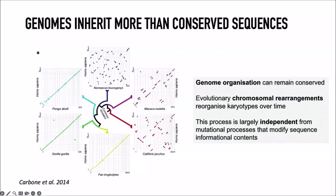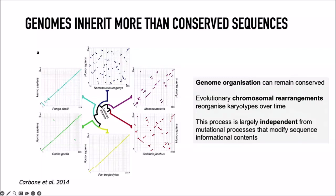Here is a different representation of the same type of information, looking at the organization of chromosomes. In this dot-plot between human and chimpanzee, dots represent orthologous sequences and they organize along the diagonal because the chromosomes are largely collinear. As we look at human versus more distantly related species, this organization remains conserved to a degree — we can still see large collinear regions — but it breaks down over evolutionary time.